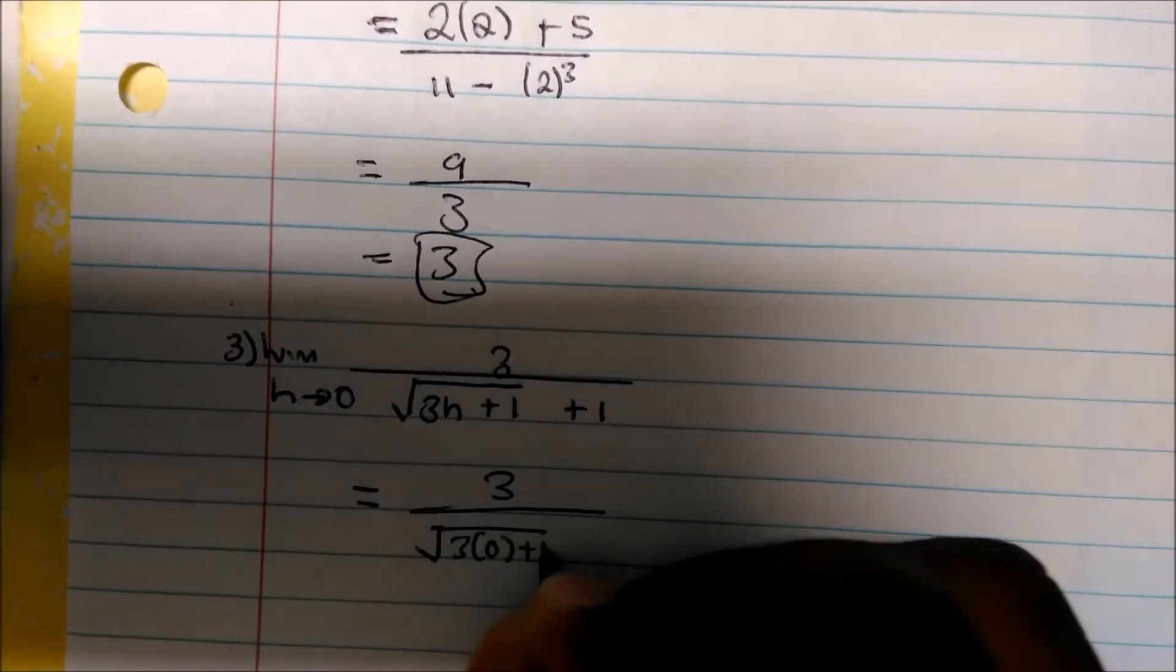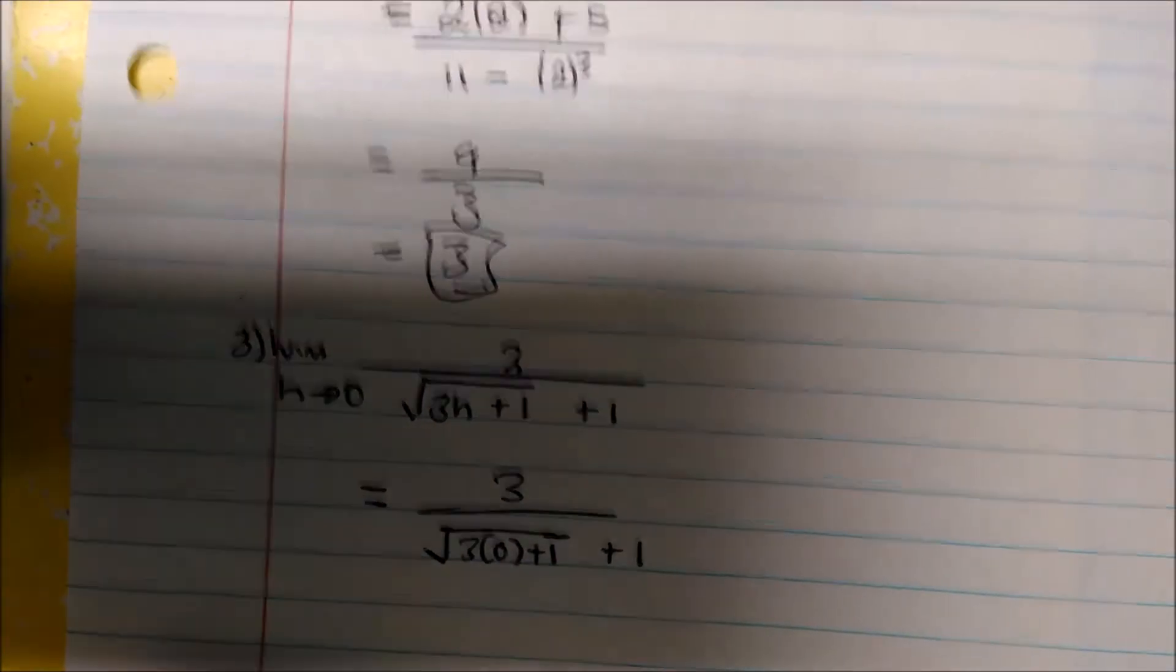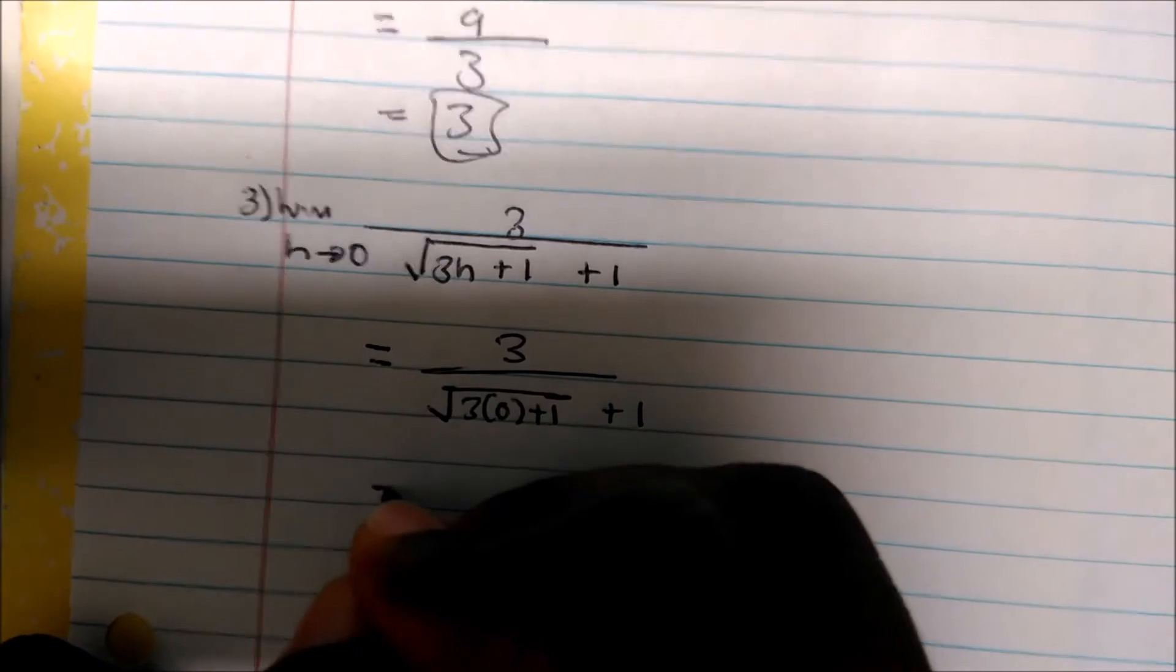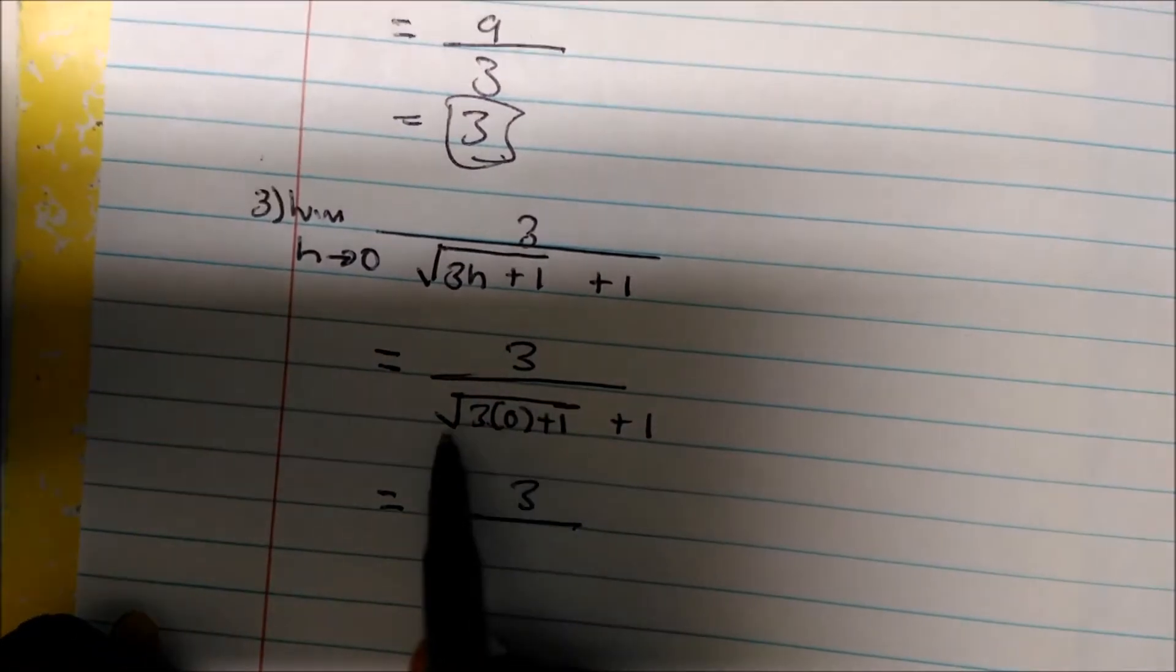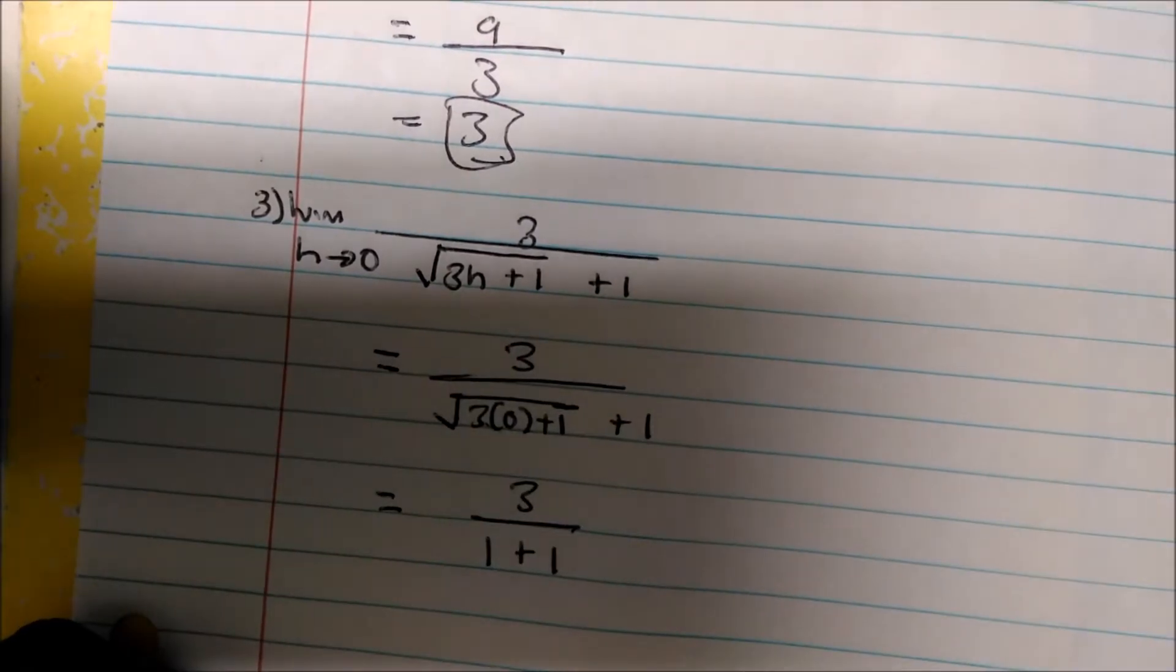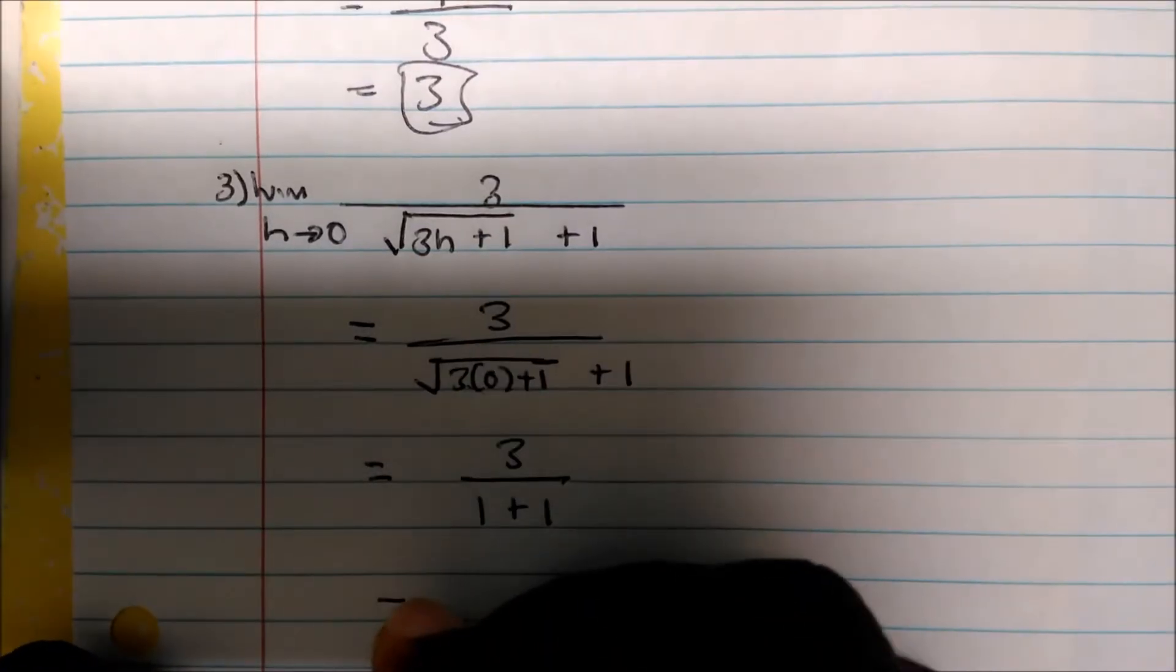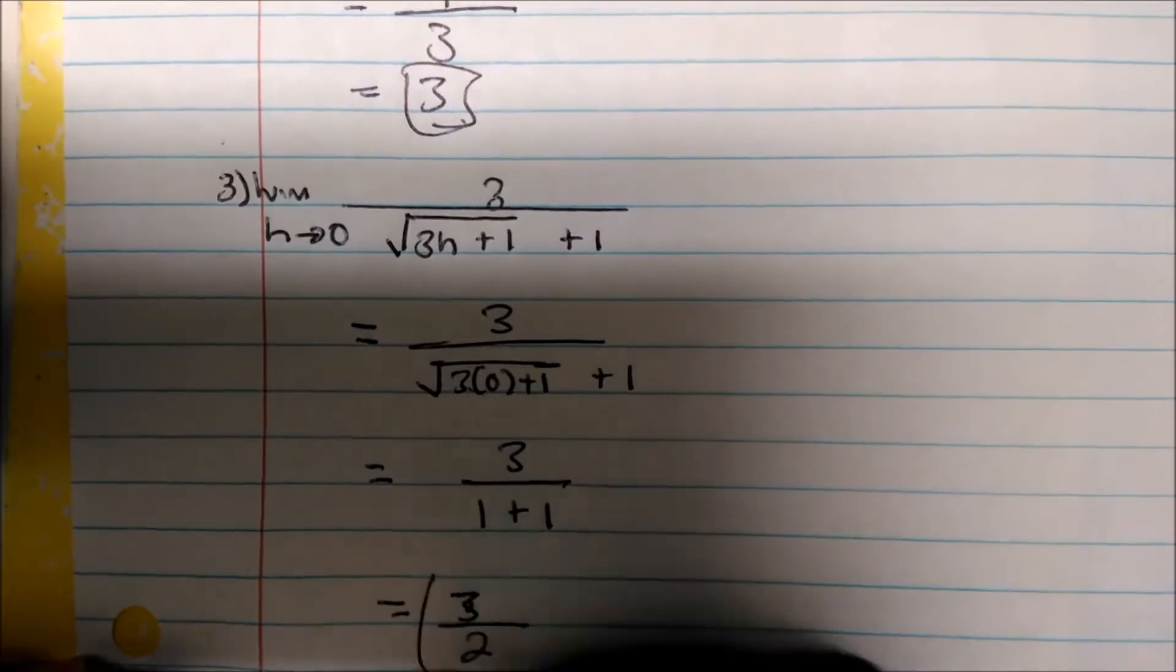The square root of 3 times 0 plus 1 plus this 1, which is not under the square root. And so this now becomes 3. Well, 3 times 0 is 0, so the square root of 1 is just 1. So 1 plus 1 is 2, and we can see that our limit is going to be 3 halves.